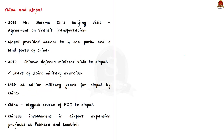China has been increasing its influence in Nepal. Former PM Oli visited Beijing in 2016 and negotiated a transit transportation agreement; a 2019 protocol gave Nepal access to four Chinese seaports and three land ports. In 2017, China's defense minister visited Nepal for the first time, followed by a joint military exercise and a military grant of $32 million. China also overtook India as the largest source of FDI in Nepal and is involved in airport expansion projects at Pokhara and Lumbini.